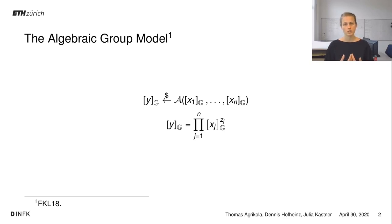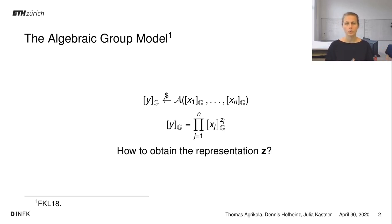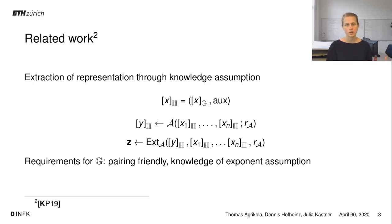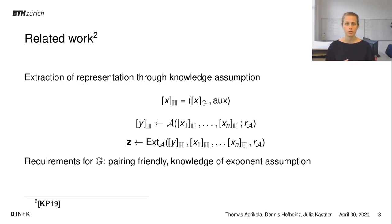A question we asked ourselves was: how can we obtain such a representation vector? If we have a group, how do we get a representation from an adversary? One answer already given is to use a knowledge assumption. If we have a group satisfying a knowledge of exponent assumption, we can use the extractor from this assumption to extract a representation vector from an adversary. However, knowledge assumptions are non-falsifiable, and therefore this is quite a strong assumption to make about the group.